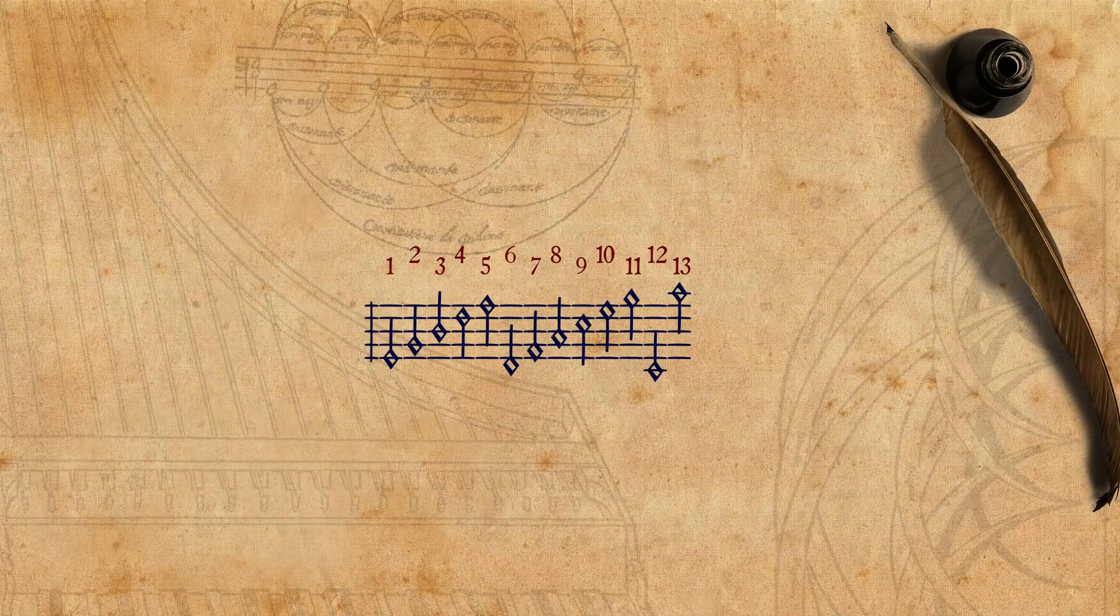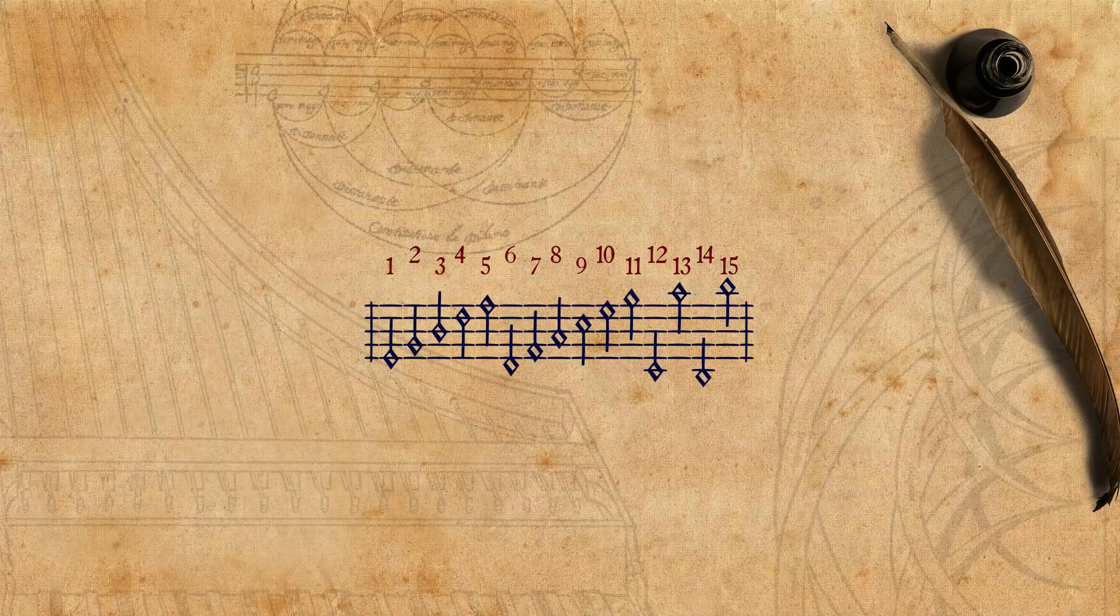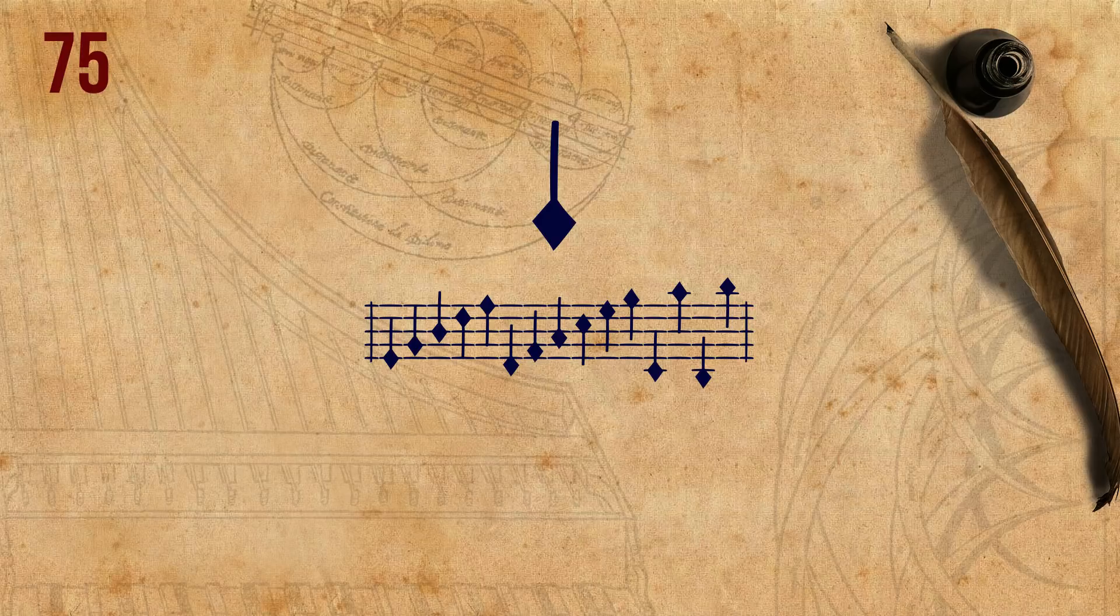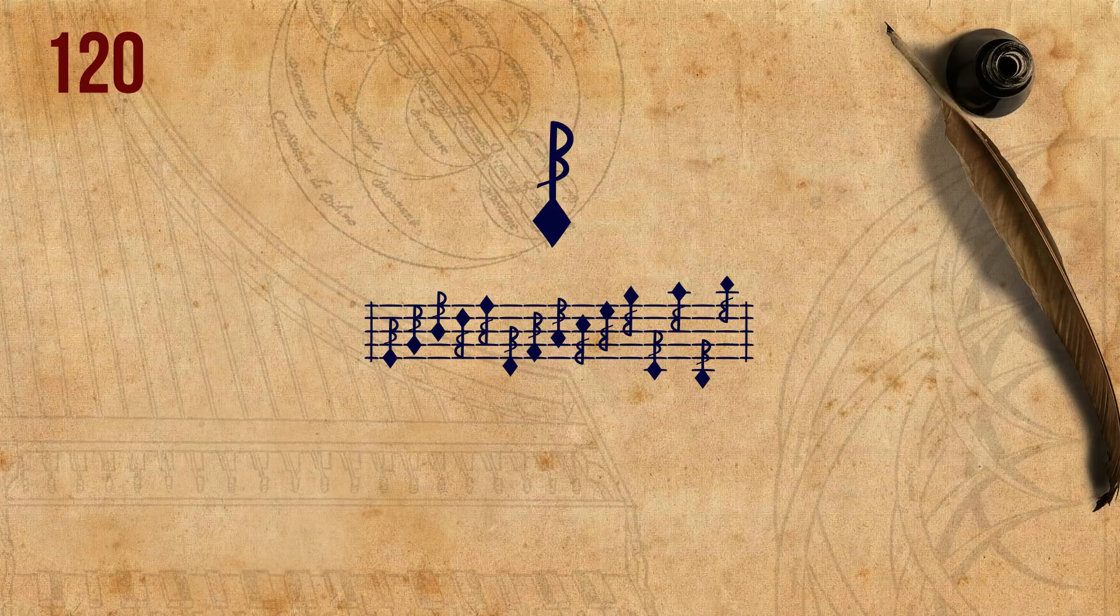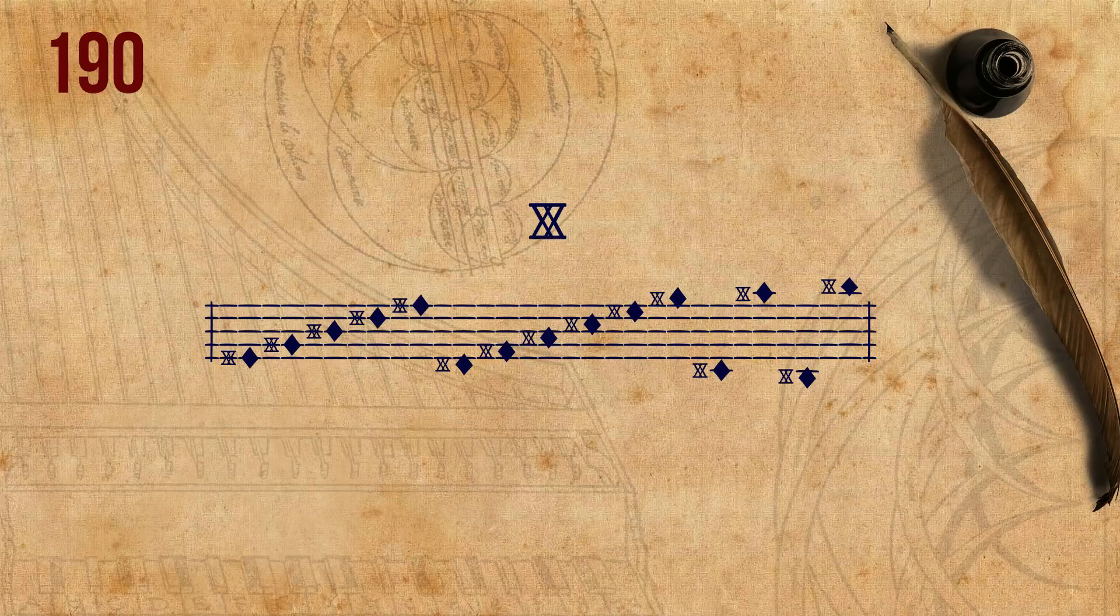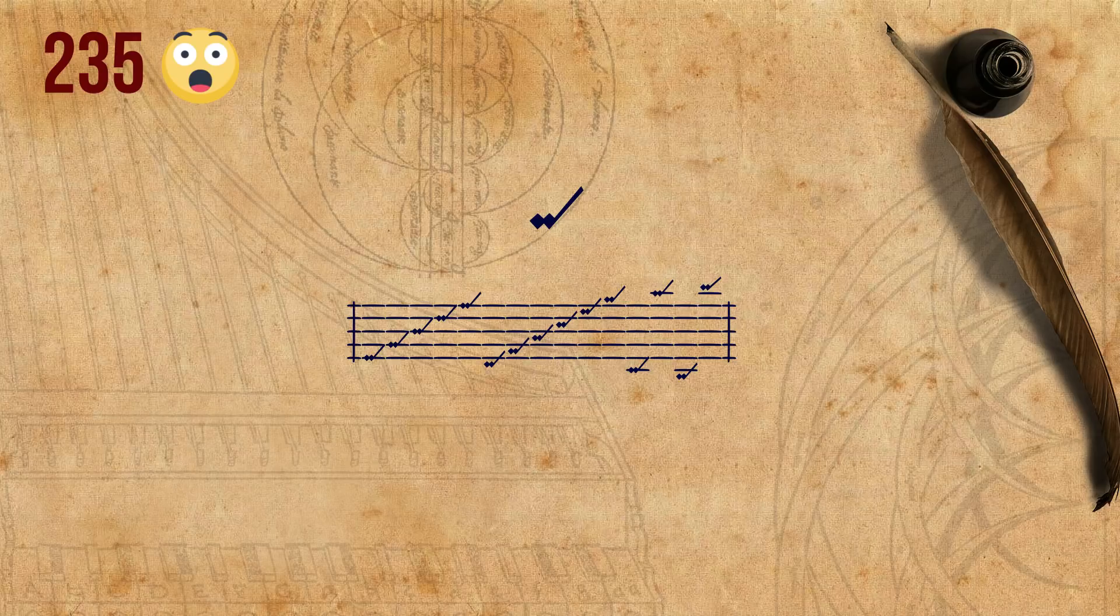So if you include the eight standard note values—long, breve, semibreve, minim, semiminim, chroma, semichroma, and bischroma—and then the three blackened note values, black long, black breve, and black semibreve, then sharps, flats, dots, and custos signs, we are already way over 200 type variants.